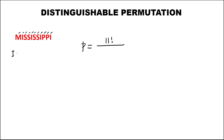We have I repeated 1, 2, 3, 4 times — so this is 4 factorial. We also have S repeated 1, 2, 3, 4 times — so also 4 factorial. We also have P repeated twice — so this is 2 factorial.